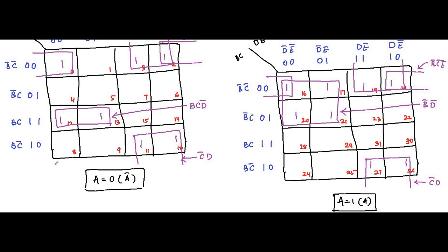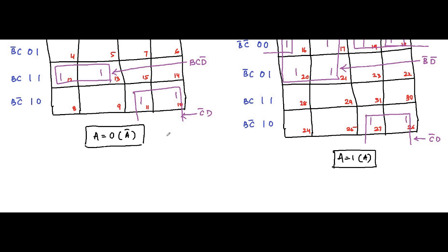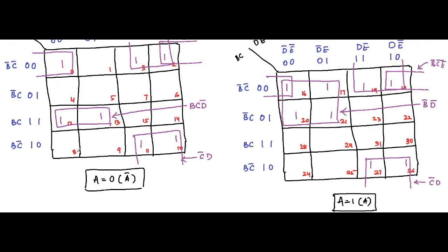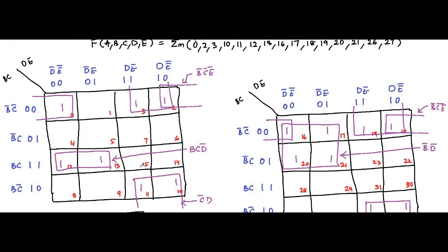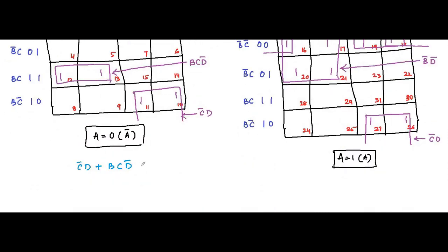For the first K-map, the minimized Boolean expression is: C-bar D + BC D-bar + B-bar C-bar E-bar, and we end it with A-bar because A-bar is common. That is the first minimized Boolean expression.